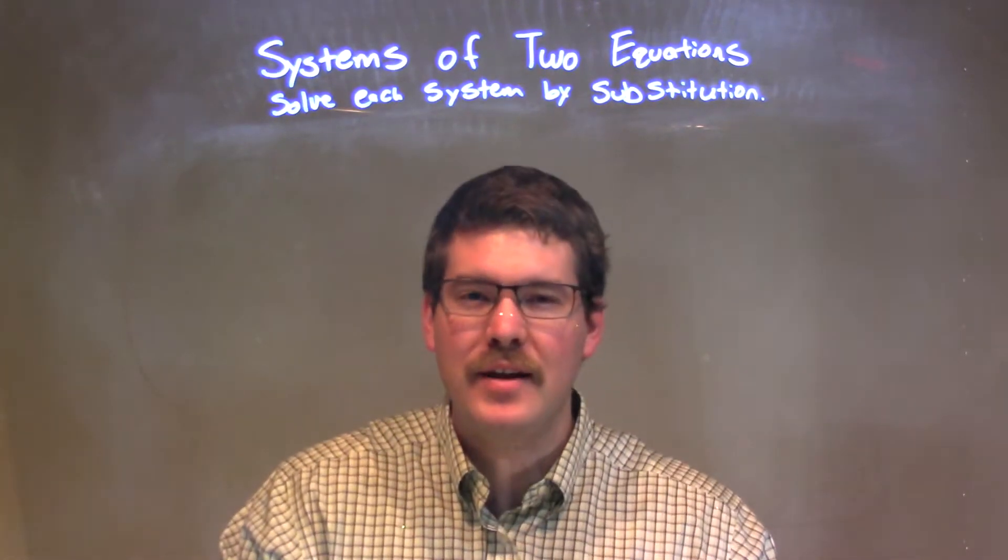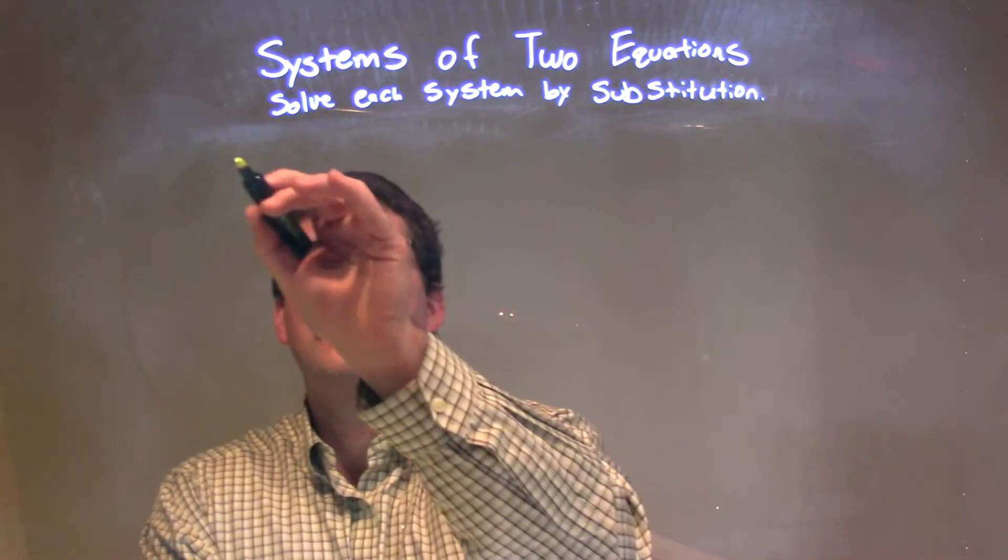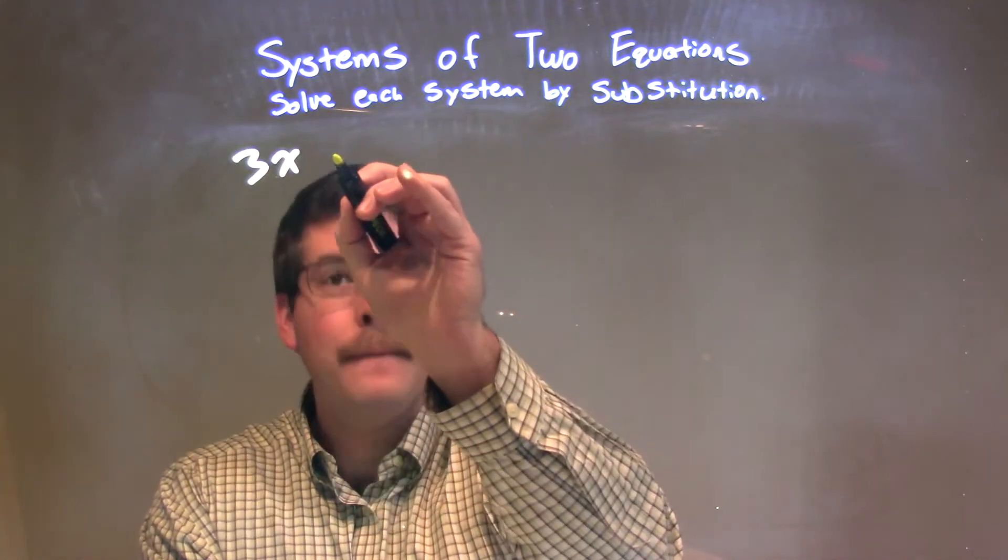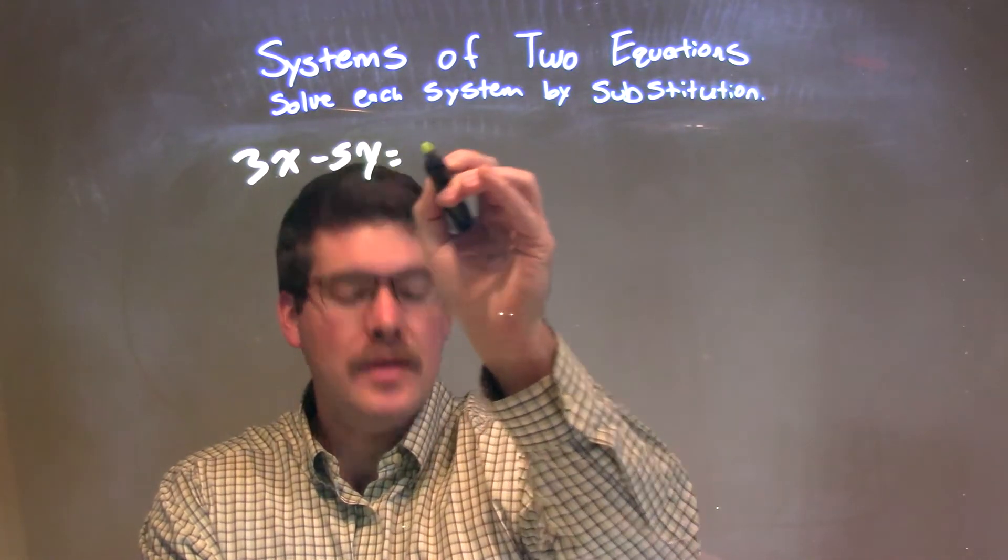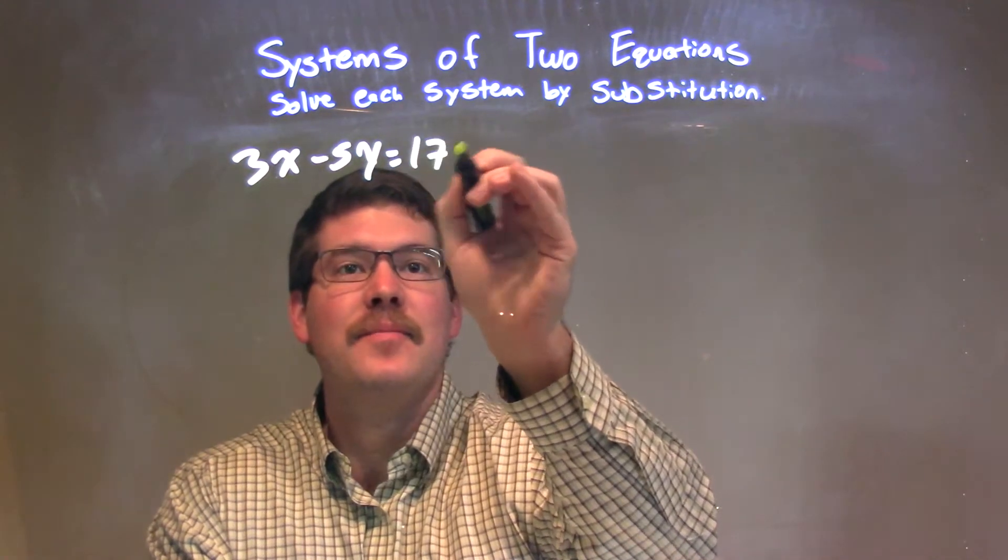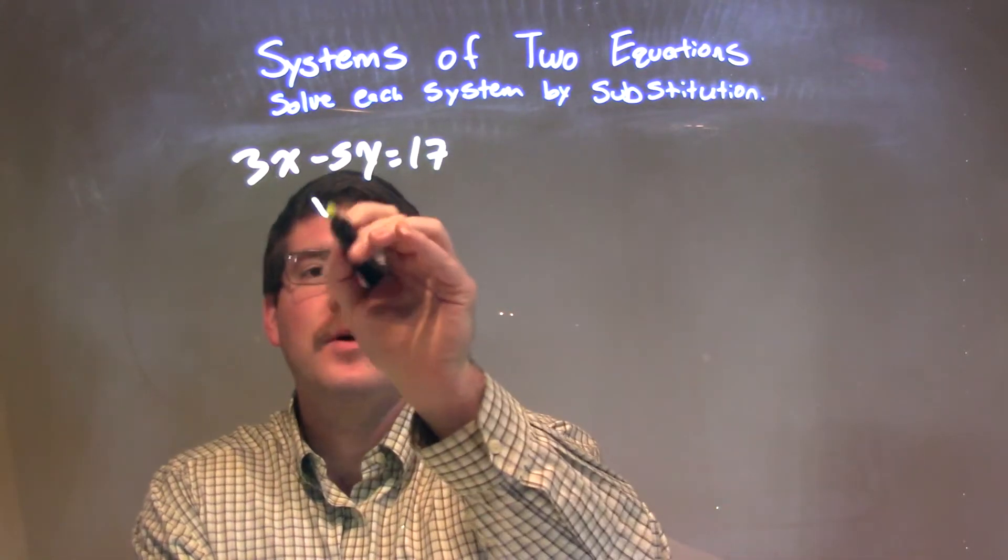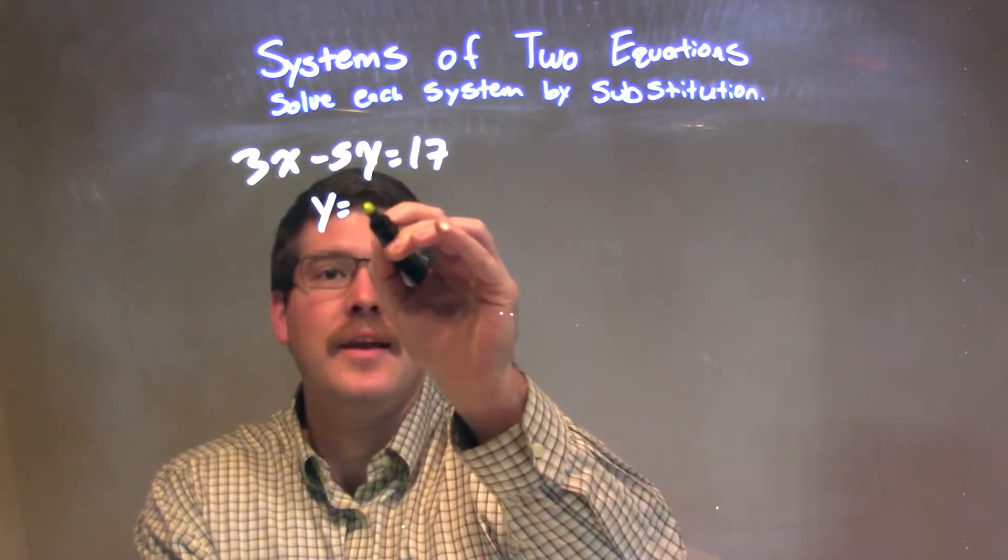So, if I was given the system 3x minus 5y equals 17, and my second equation, just y equals negative 7.